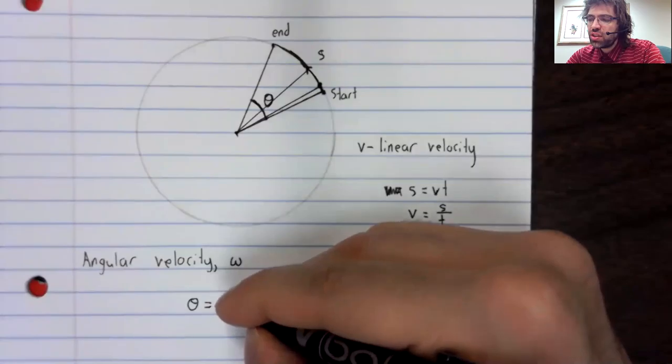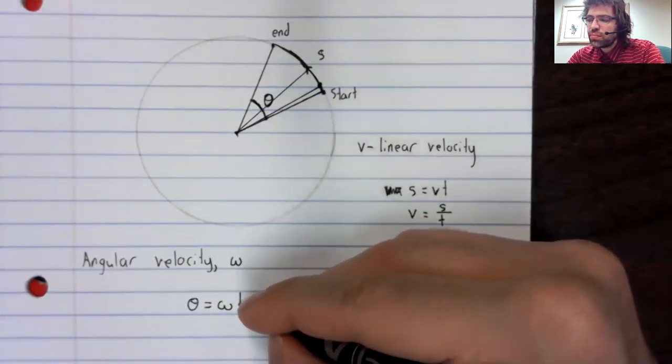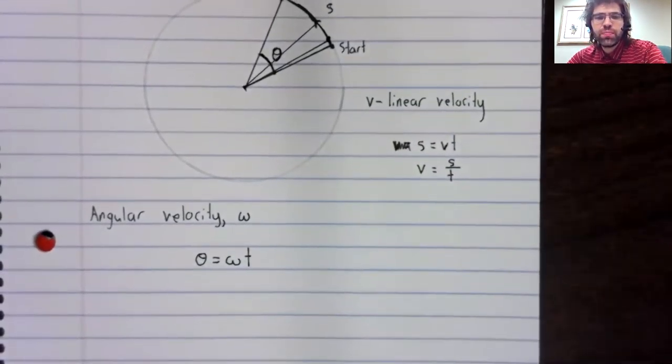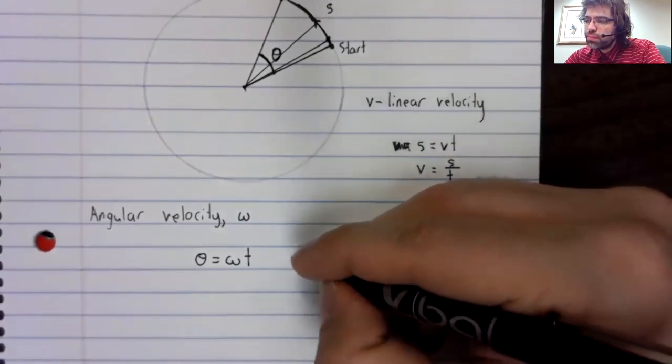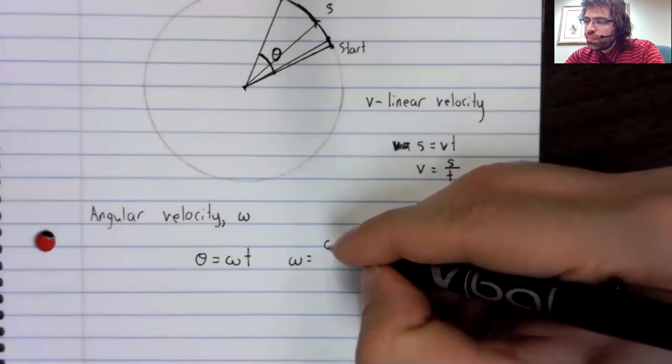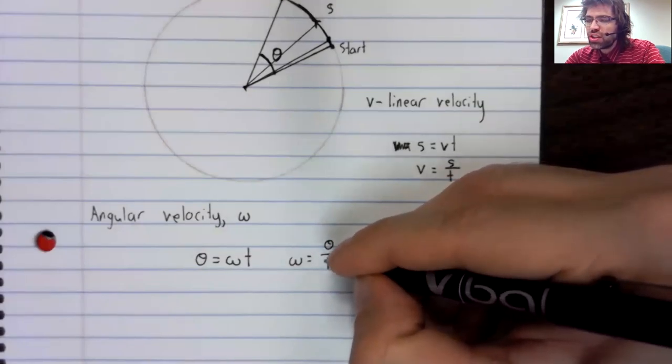And distance equals rate times time. So this gives you an equation for the angular velocity.